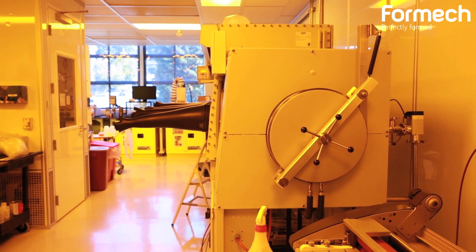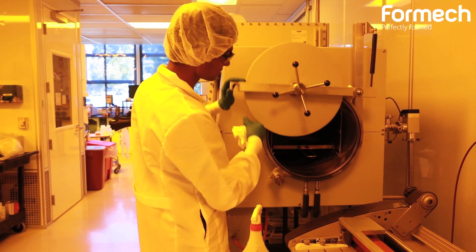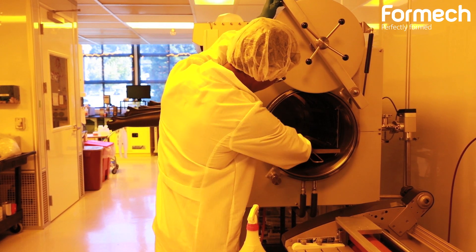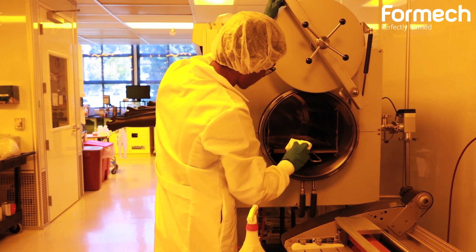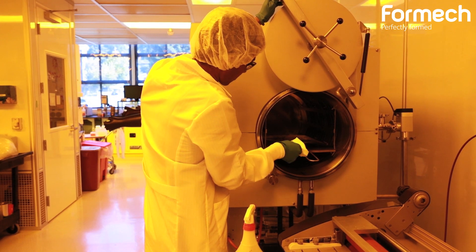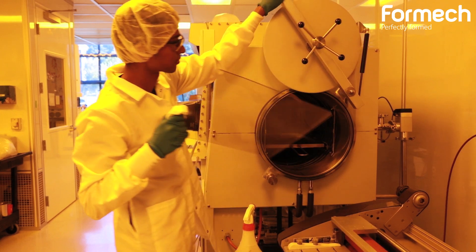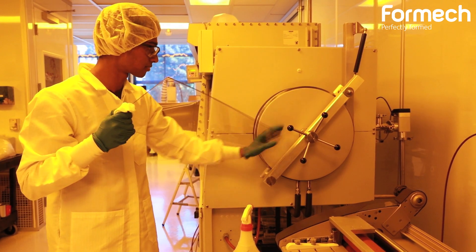Polycarbonate is a hygroscopic material that absorbs water. When you heat it up to a high temperature, you get lots of bubbling and pitting on the surface. So in order to avoid that, we put our polycarbonate in a vacuum oven for three hours at 120 degrees Celsius for extracting all the moisture from the sheet before forming.